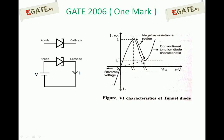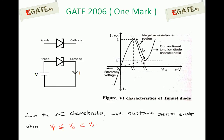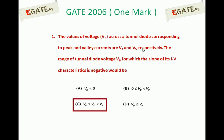The negative slope region exists for the tunnel diode from point A to point B — that is, from peak point to valley point. If the diode voltage is between peak voltage Vp and valley voltage Vv, the characteristics have a negative slope; that region is called the negative resistance region. The tunnel diode exhibits negative resistance characteristics between peak voltage and valley voltage. So, the correct answer for this question is C. Thank you.